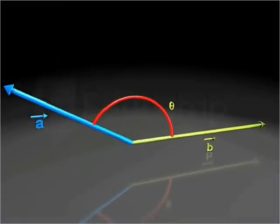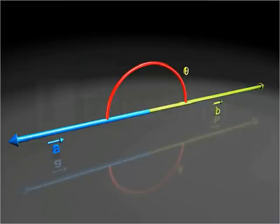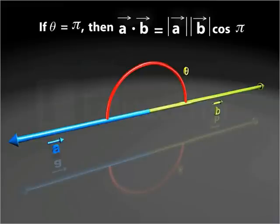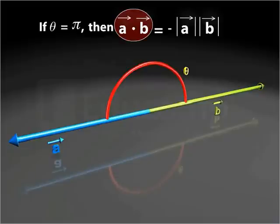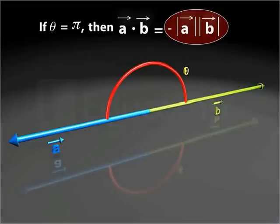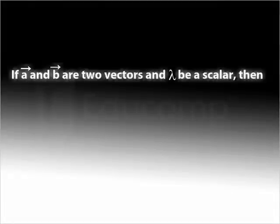The dot product of two vectors is minimum for theta equal to pi, as cos theta has its minimum value of minus 1 for theta equal to pi. This helps us conclude that the dot product of two vectors is the negative of the product of their magnitudes for theta equal to pi.